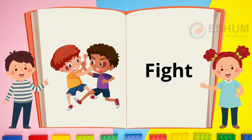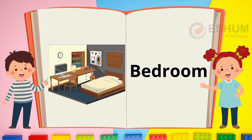Fight. In the picture you see two boys who are angry — they are pushing and punching. The boys are in a fight. Bedroom. A bedroom is a place where you sleep. This bedroom has one bed and one computer. What do you have in your bedroom?